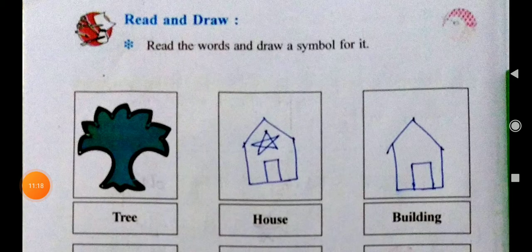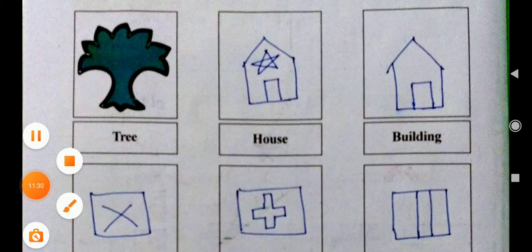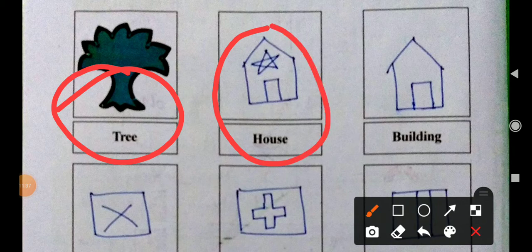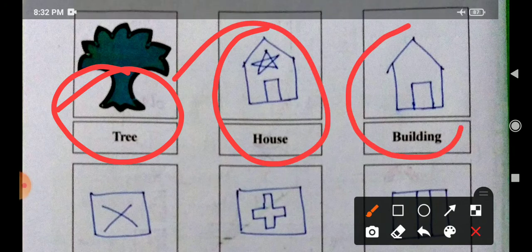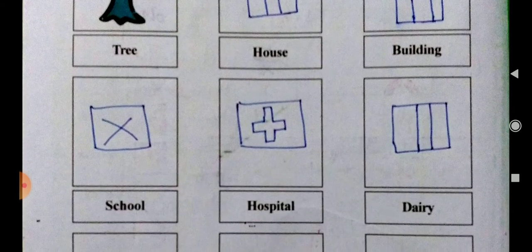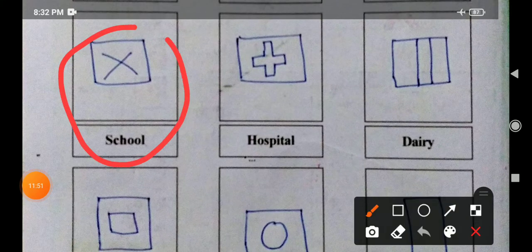Read and draw: read the words and draw a symbol for each. He has given words and I have already drawn examples. The symbol of tree looks like this. The symbol of house looks like a building. You can draw it or make your own building symbol. The next one is school, and this is a symbol of school. Then hospital.